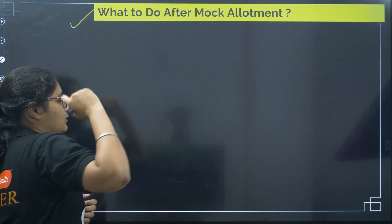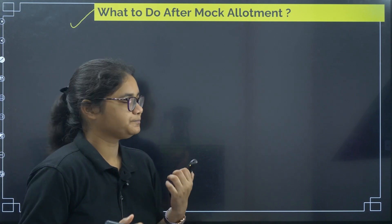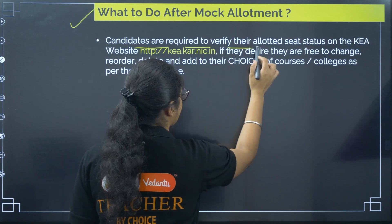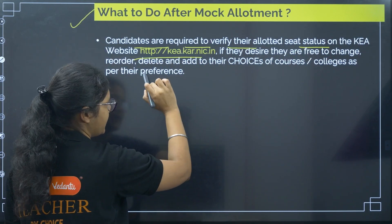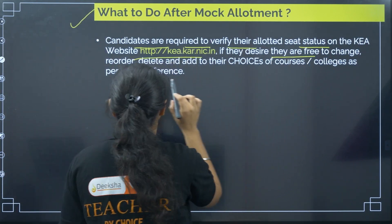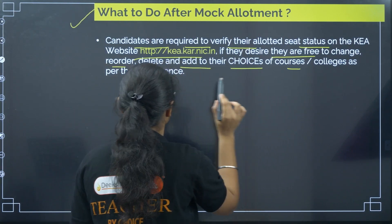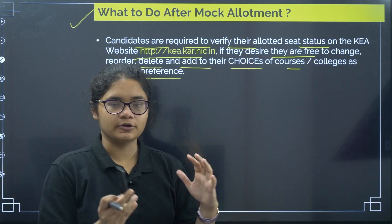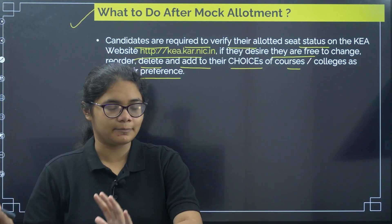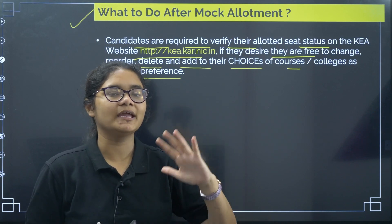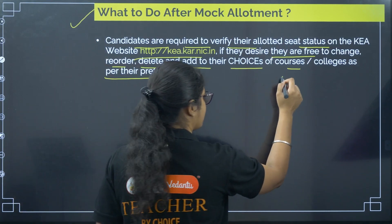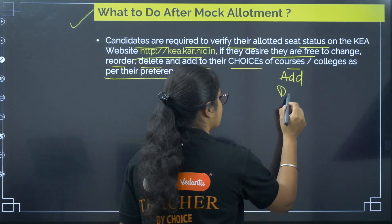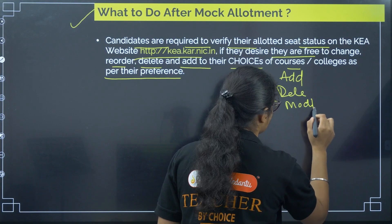Now, what to do after mock allotment? Once the mock allotment is done, you have to check it. Candidates are required to verify their allotted seat status on the KEA website. If they desire, they are free to change, reorder, delete, or add to their choices of courses and colleges as per their preference. If you are happy with the allotment, you can keep it as it is. If you are not happy, you can make any changes — you can add new choices, delete, or rearrange your options.